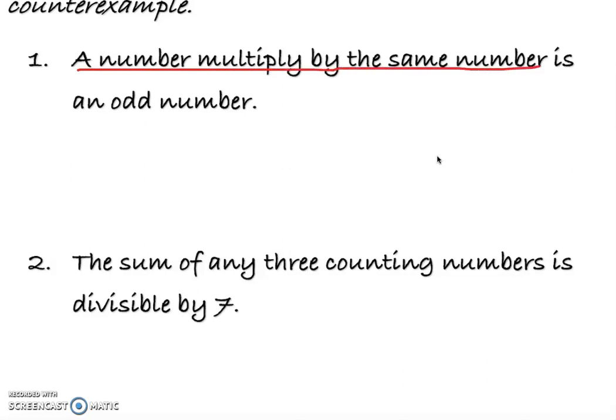Let's translate it. A number multiply by the same number - so a number is 1 multiplied by the same number which is also 1, that is going to be odd number which is 1. I'm not actually making any counter example, I just translate what they said. I didn't make the conjecture wrong or proof wrong or opposite.